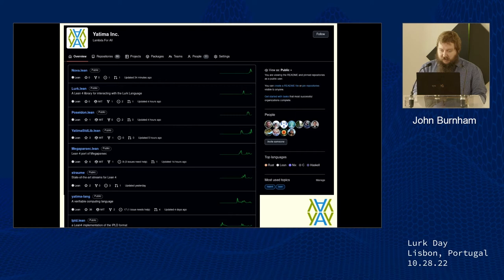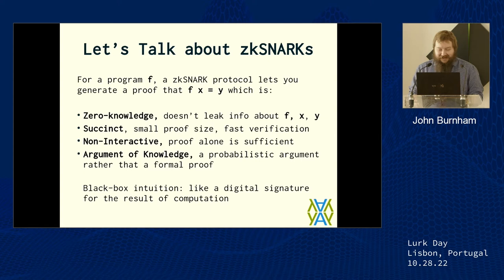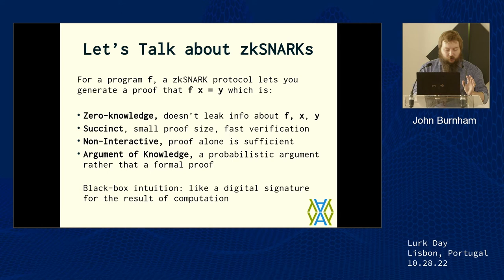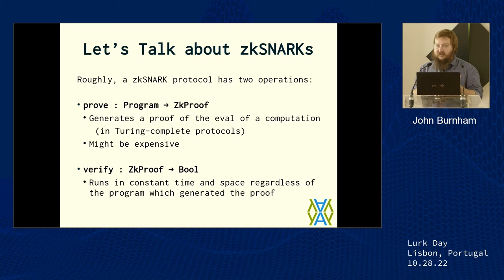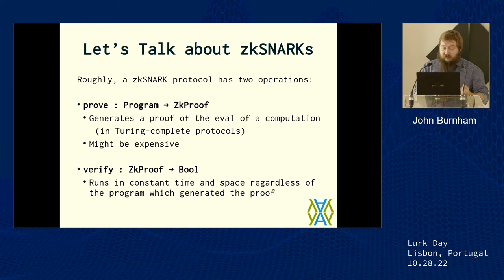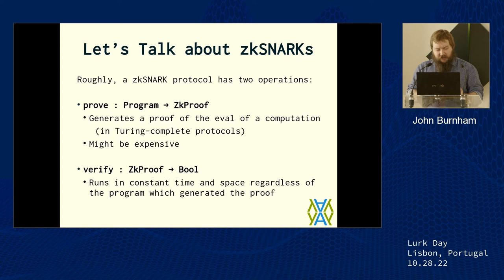Let's talk about ZK-SNARKs. For our purposes, we don't have to worry about what SNARKs actually are — we just have to worry about the interface of two functions they give us: prove and verify. Prove is a general and complete protocol that generates a proof that some computation evaluates to a certain result, and it might be expensive. Verify takes that proof and gives us a boolean — if it's not a good proof, it'll say false.